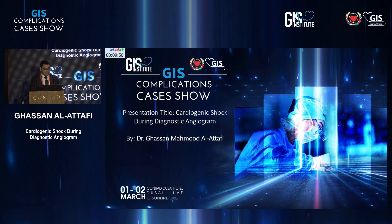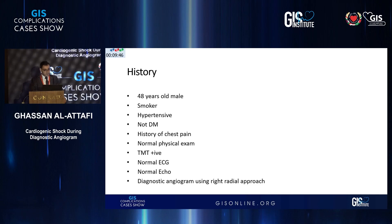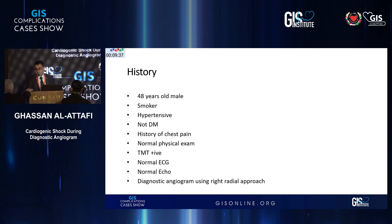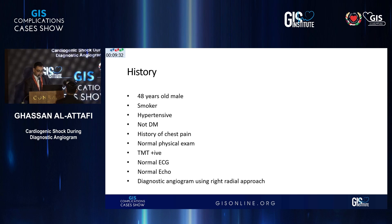The presentation is titled Cardiogenic Shock During Diagnostic Angiogram. The patient is a 48-year-old male smoker, hypertensive, non-diabetic, with a history of chest pain. Physical exam, ECG, and echo were normal, but his treadmill test was positive. For that reason, he underwent diagnostic angiogram.